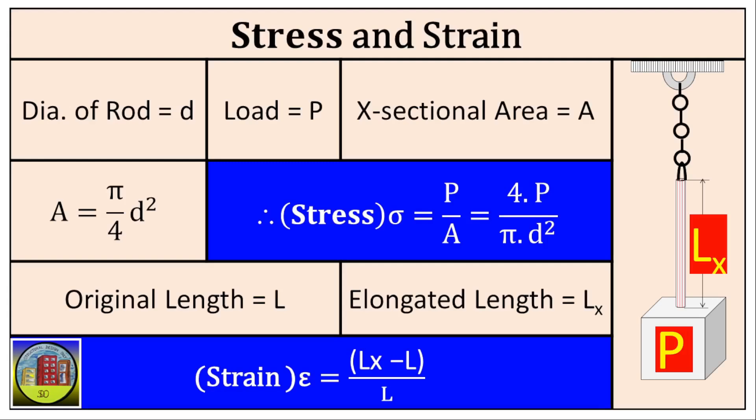Say original length of the rod is L, length under stressed condition Lx, now increment in length is equal to Lx minus L, and increment in length over the original length equals to Lx minus L by L. It's basically a ratio, so it doesn't have any units. Strain is denoted by Greek letter epsilon.